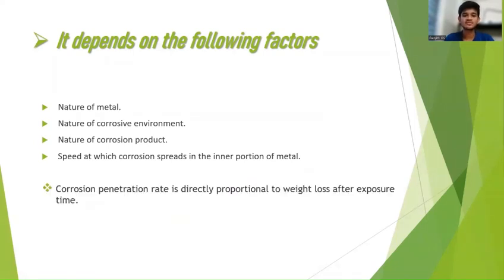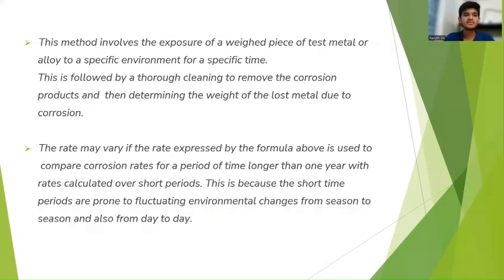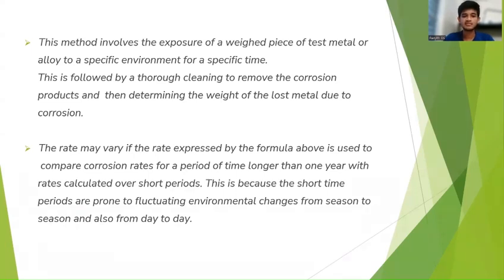Corrosion penetration rate is directly proportional to weight loss after exposure time — that is, CPR is directly proportional to weight loss. If the CPR is more, then the weight loss is also more; if the CPR is less, then the weight loss is also less. This method involves the exposure of a weighted piece of test metal or alloy to a specific environment for a specific time, followed by thorough cleaning to remove the corrosion product and then determining the weight of the lost metal due to corrosion. The rate may vary if expressed by a formula used to compare corrosion rates over periods longer than one year with rates calculated over short periods, because short time periods are prone to fluctuating environment changes from season to season and day to day.